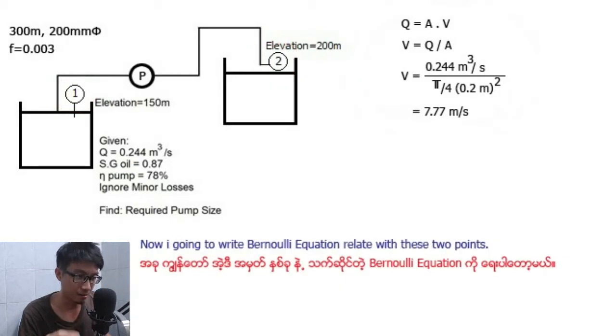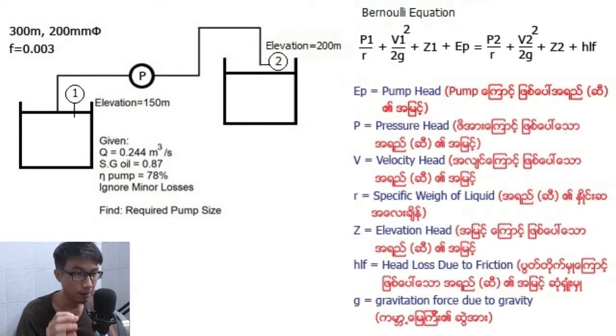Now I am going to write the Bernoulli equation relating these two points. P equals pressure, V equals velocity, Z equals elevation head, HLF equals head loss due to friction, and g equals gravitational acceleration due to gravity.